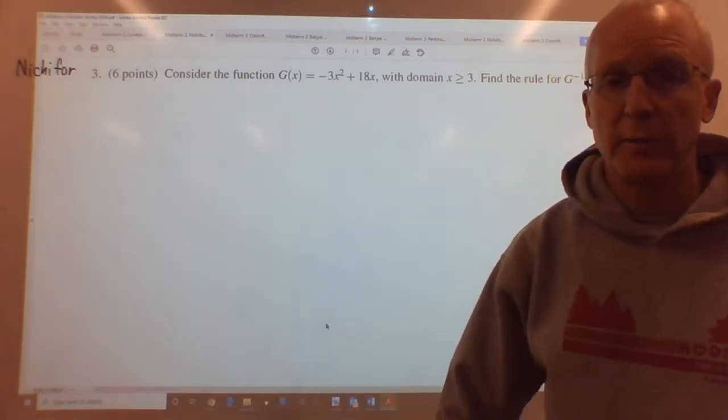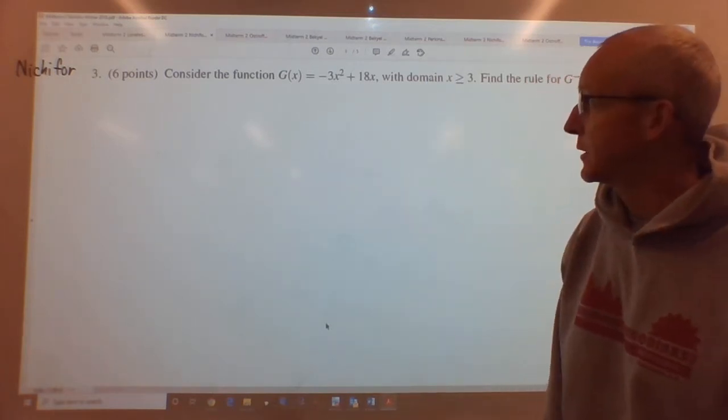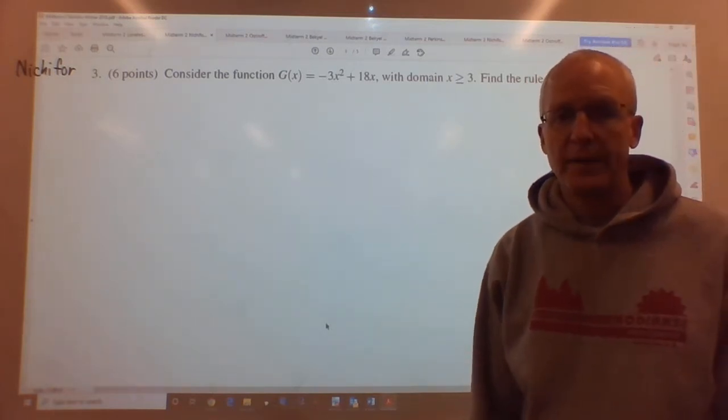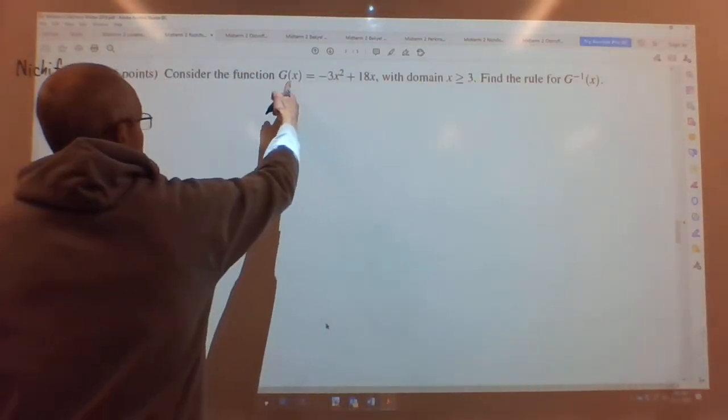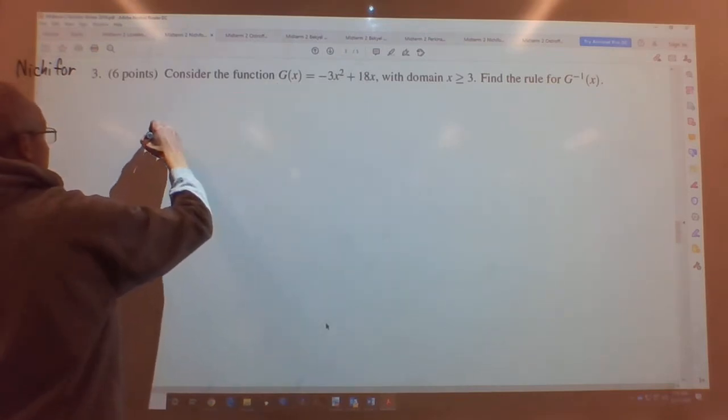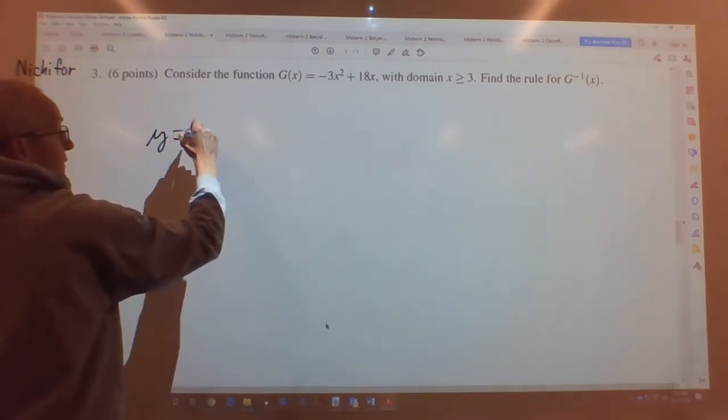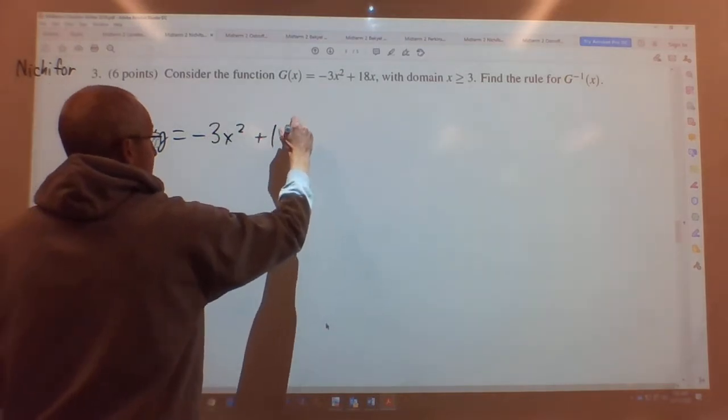Now they don't say to find the domain and range, so there's probably a reason why they said that. They just say find the inverse function, g inverse of x. So first we'll call g of y because it's easier to write y all the time than g of x. So y equals negative 3x squared plus 18x.